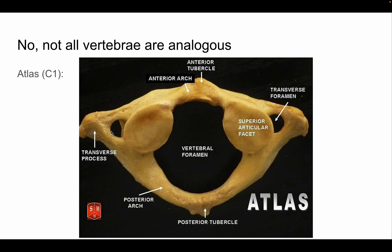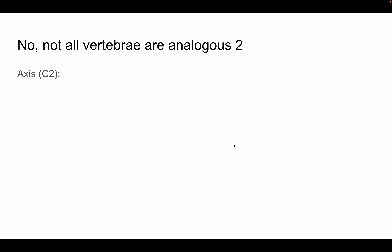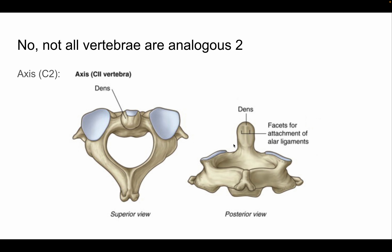The vertebral artery runs through the transverse foramen, and there is also a vertebral foramen. Now this is another atypical vertebra — the axis, or C2. This articulates with the atlas. The dens, or odontoid process more specifically, is found only on C2 — that's how you can identify a C2 vertebra.